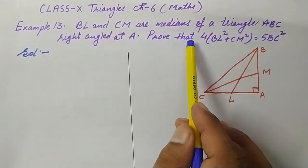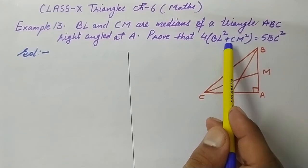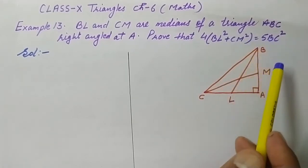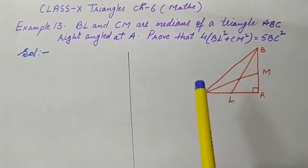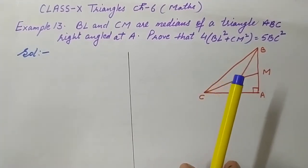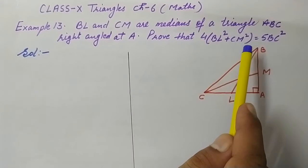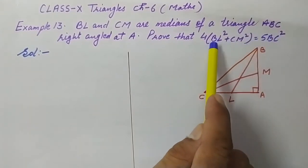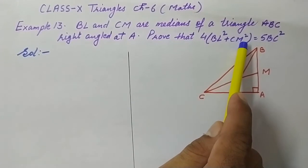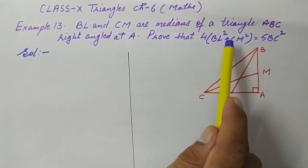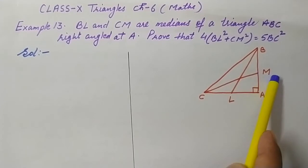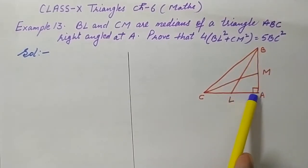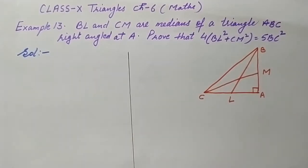We have to prove that 4(BL² + CM²) = 5 × BC². To do this, we will use the Pythagorean theorem to find BC², BL², and CM² separately. We will then add BL² and CM², substituting AM as half of AB and AL as half of AC wherever they appear.